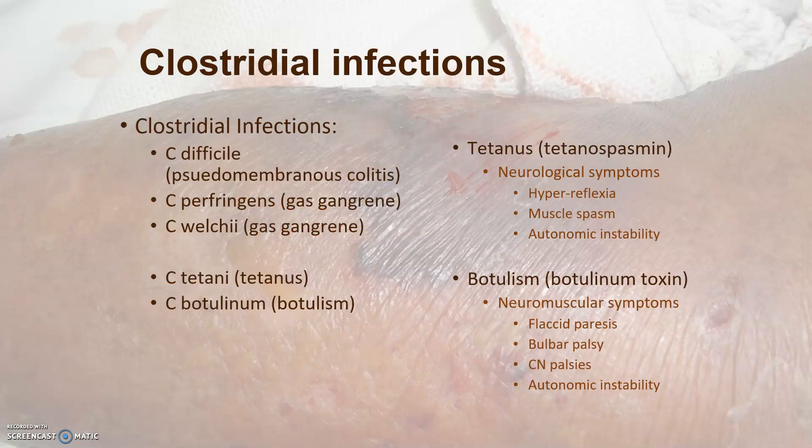A little more about clostridial infections: this is a group of organisms that can cause serious systemic conditions, particularly in immunocompromised patients. We need to know the organisms that cause gas gangrene, pseudomembranous colitis, tetanus, and botulism, and understand a little bit about each of these conditions.